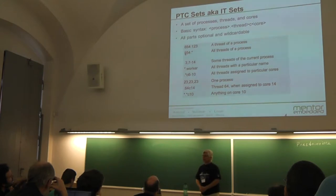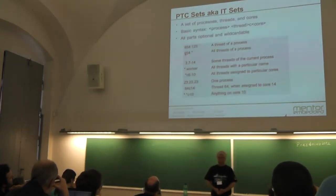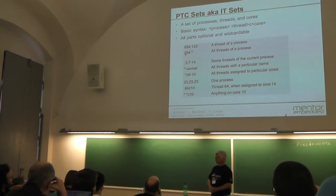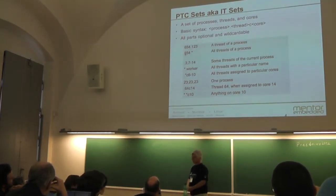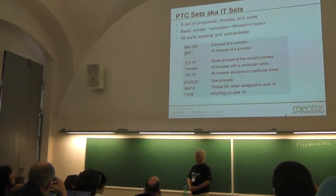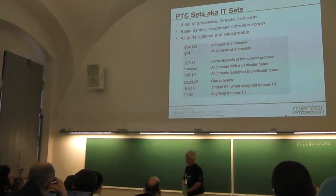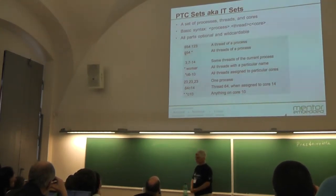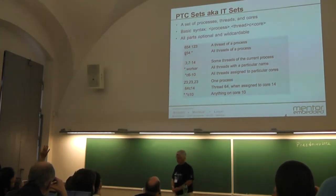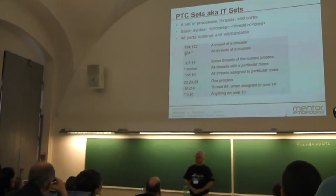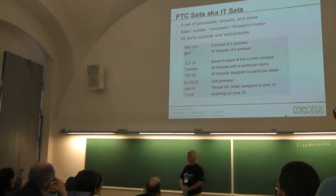There are some examples of how you would use this. Basically you could explicitly refer to a thread of a set by number, using wildcards. You use commas to make different-shaped sets. You have the ability to name threads and could use the name of the thread on the thread side. Or you could ask for threads assigned to a particular core.